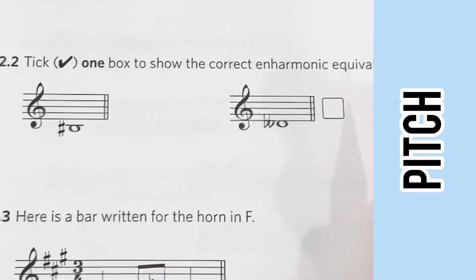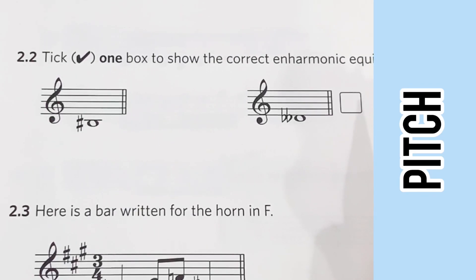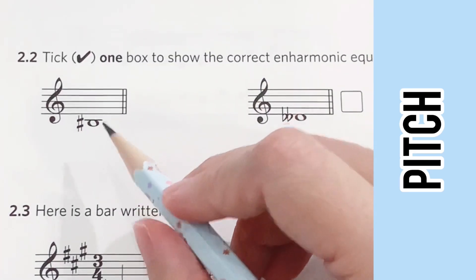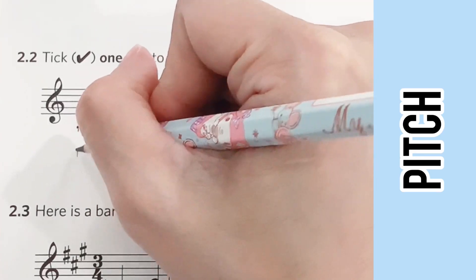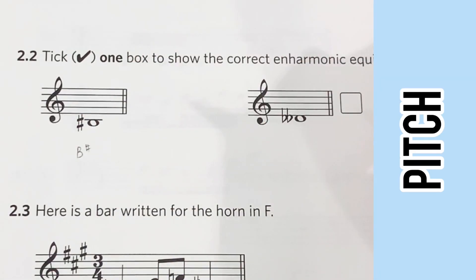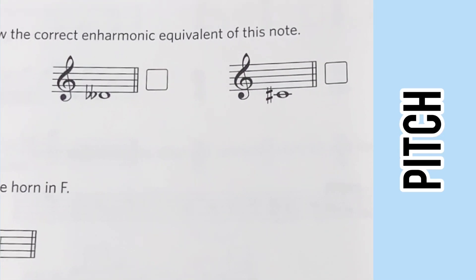Moving on with this question, we are required to find an enharmonic equivalent of the given notes. The given note here is B sharp, so let's take a look at the choices given.